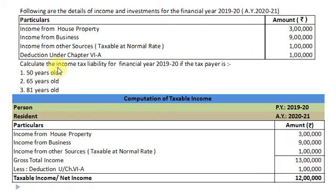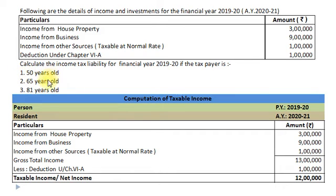Calculate the income tax liability for the Financial Year 2019-20 if the taxpayer is: Number 1 – 50 years old; Number 2 – 65 years old; Number 3 – 81 years old.